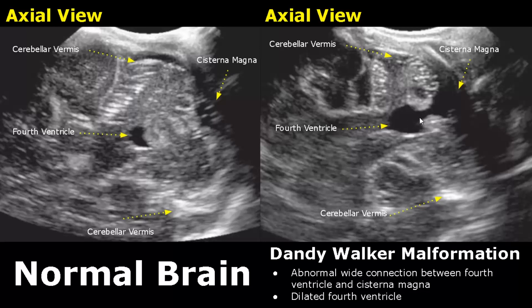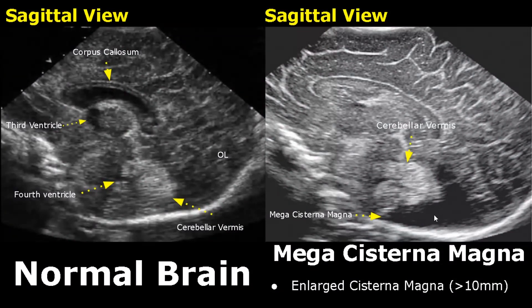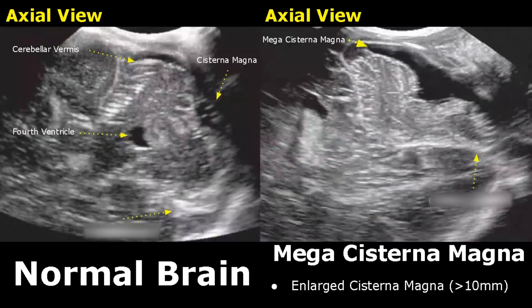In mega cisterna magna, we will see a large anechoic region behind the cerebellum. It is a normal variant, usually diagnosed when the cisterna magna measures 10 millimeters or more. Here is an axial view of mega cisterna magna — we can see a large anechoic region behind the cerebellum.